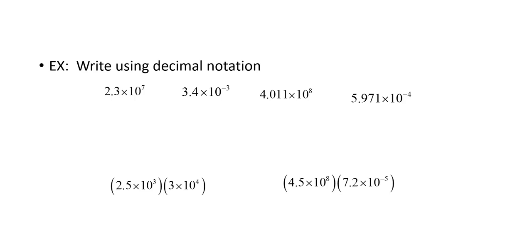So we can go back and forth between them using decimal notation. 2.3 times 10 to the seventh. I move that decimal point one, two, three, four, five, six, seven places to the right. There we go. 23 million.